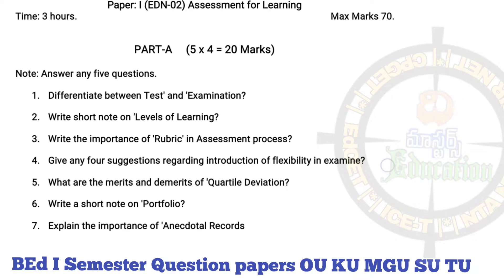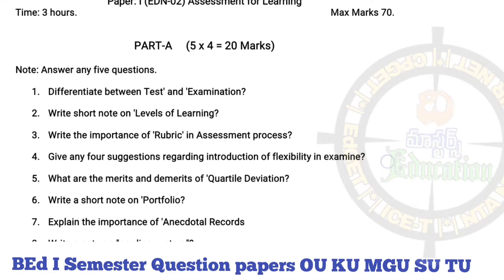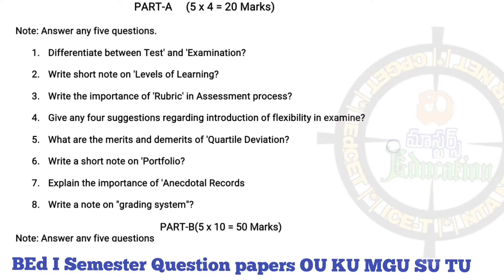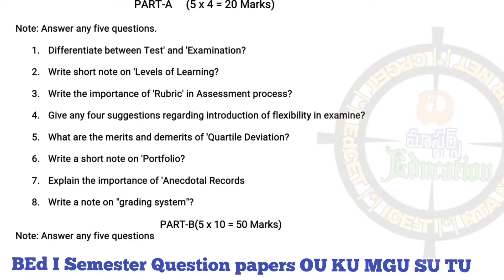So this is an assessment for learning. So in this question paper pattern, I will have a question paper of 17 marks, and Part A and Part B. Part A will have 8 questions, and you will attempt any 5. So in these 5 questions, each will carry 4 marks.